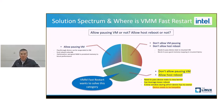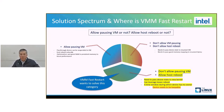VM Fast Restart wants to solve the final category, in which we don't allow pausing the VM and we allow host reboot. This is the most flexible solution, meaning both the kernel and QEMU can be updated. We can leverage kexec reboot to reduce the reboot time. We also want to support pass-through devices. During the reboot time window, the pass-through device has no owner. Since we can't rely on the guest driver to suspend the device, the choice here is to keep the device alive across the reboot.